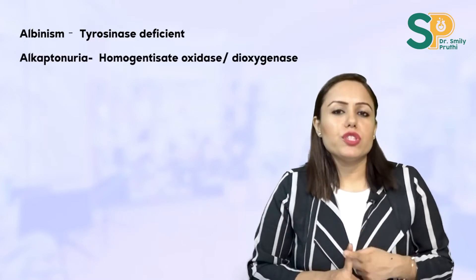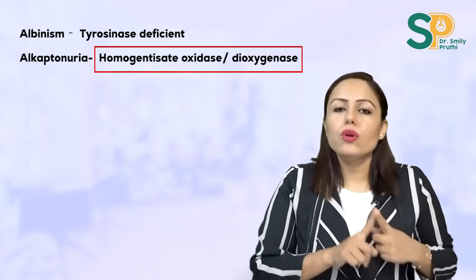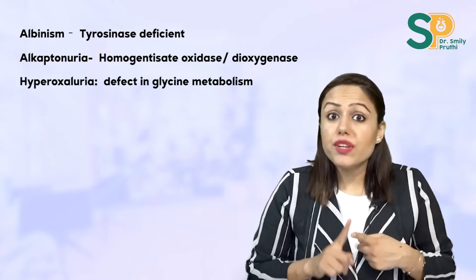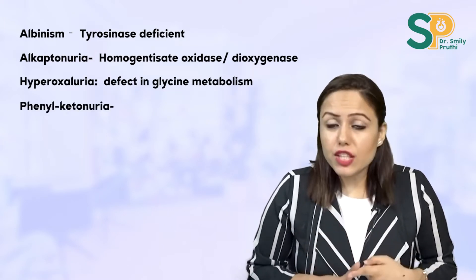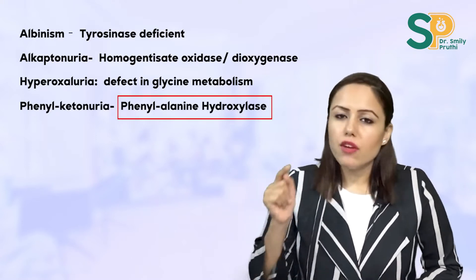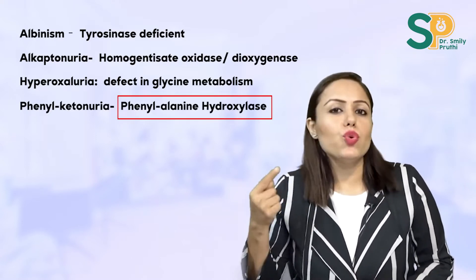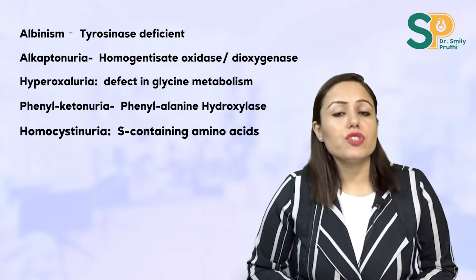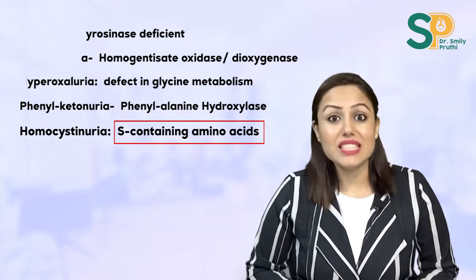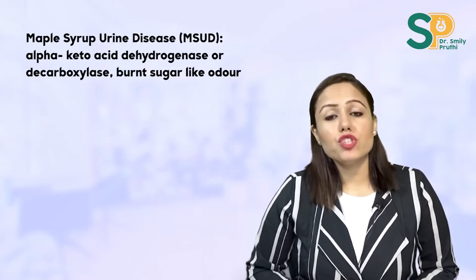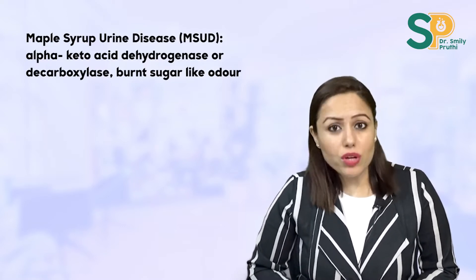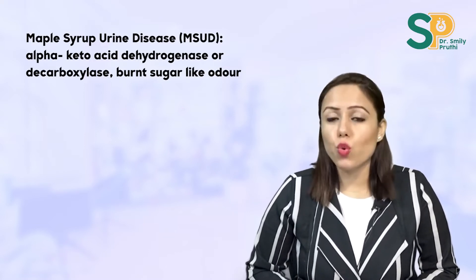Alkaptonuria — enzyme deficiency is homogentisate oxidase or homogentisate dioxygenase. Also do hyperoxyluria, which is a defect in glycine metabolism. Phenylketonuria — the enzyme deficient is phenylalanine hydroxylase, which converts phenylalanine to tyrosine. Homocystinuria is a defect in sulfur-containing amino acids: methionine and cysteine. Maple syrup urine disease — branched-chain amino acid dehydrogenase or decarboxylase is deficient; these patients have a burnt sugar-like odour, while PKU patients have a mousy odour.